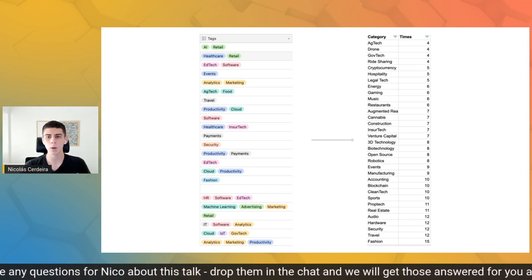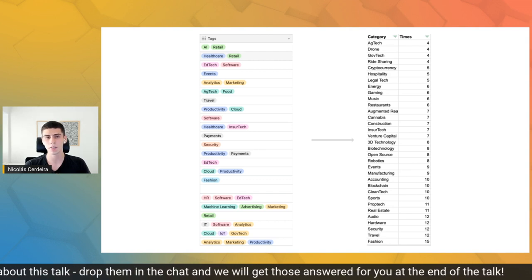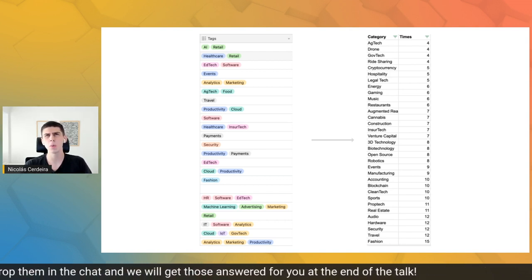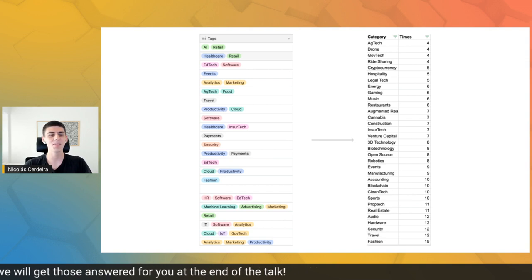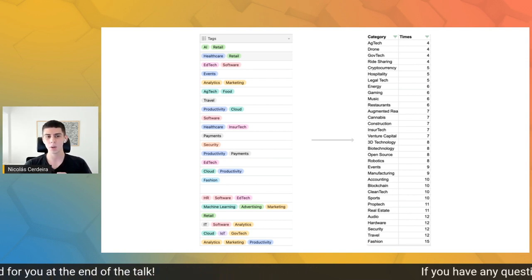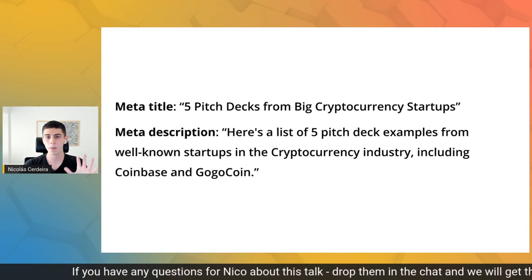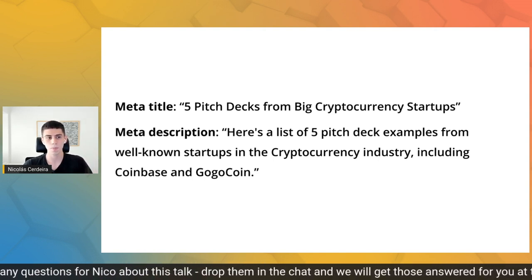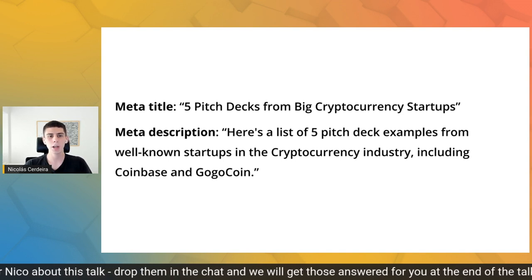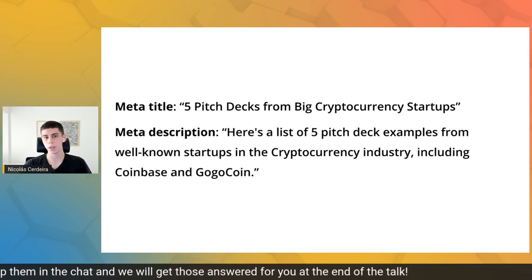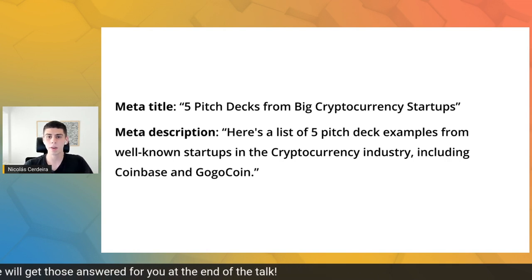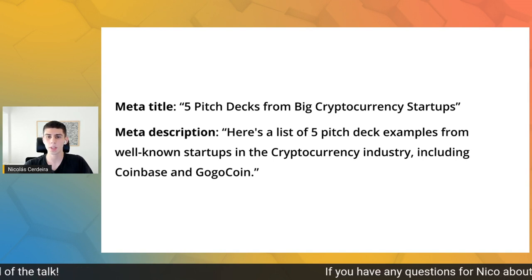We only kept those topics that had three or four or more pitch decks. We then created a meta title for each topic, combining different variants of text with the topic itself. For example, for the cryptocurrency article it was 'Five Pitch Decks from Big Cryptocurrency Startups.' Following a similar process, we created a meta description for each topic.